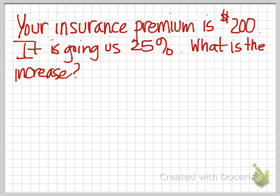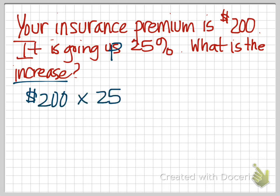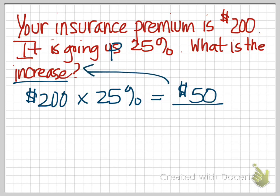I have one more for you, and this one involves not a discount, but an increase. Your insurance premium is $200 and it is going to go up by 25%. What is the increase? Well, if our original amount is $200 and it is going to go up by 25%, that means that our increase is $50. And we can stop right there — our increase is $50.